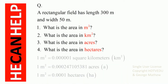A rectangular field has a length of 300 meters and a width of 50 meters. What is the area in meters squared? What is the area in kilometers squared? What is the area in acres? And what is the area in hectares? The conversion factors are given.